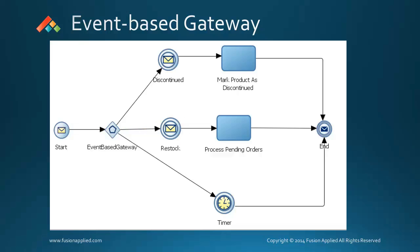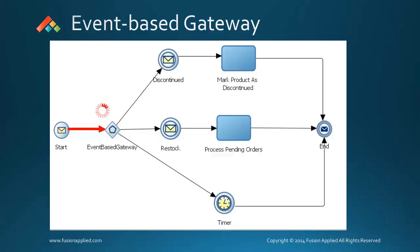Until the gateway receives a message, the token will wait at the gateway. As soon as the gateway receives a message, the token will leave the gateway. You can also set up a timer task so that if no message is received within a set time, the token can exit the gateway.